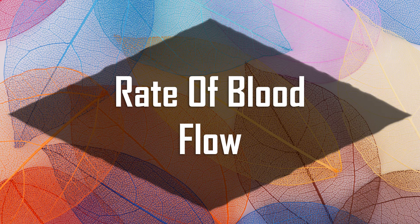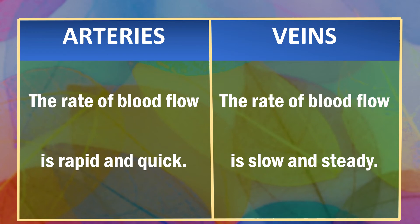Now, let's look at the rate of blood flow in arteries and veins. In arteries, the rate of blood flow is rapid and quick, while in veins, the rate of blood flow is slow and steady due to the lesser pressure.